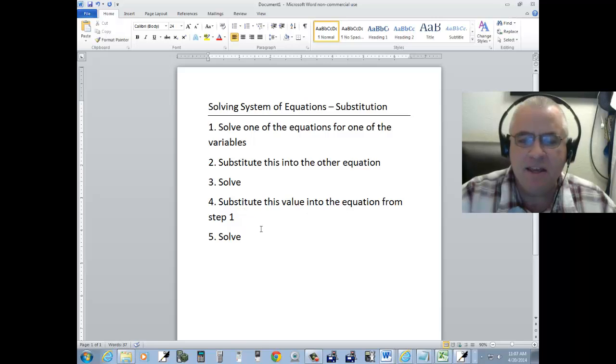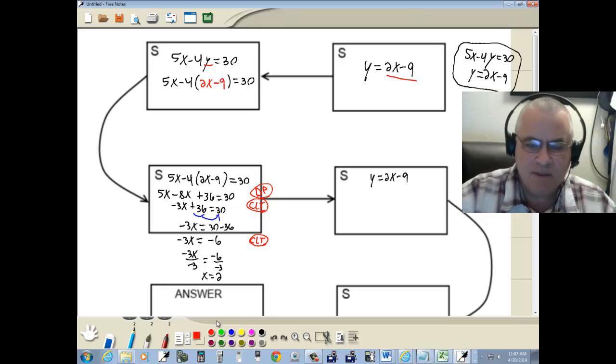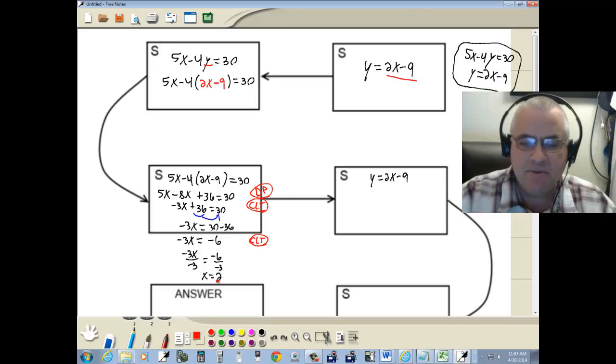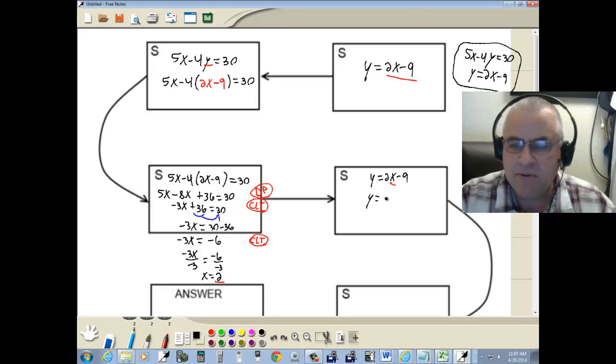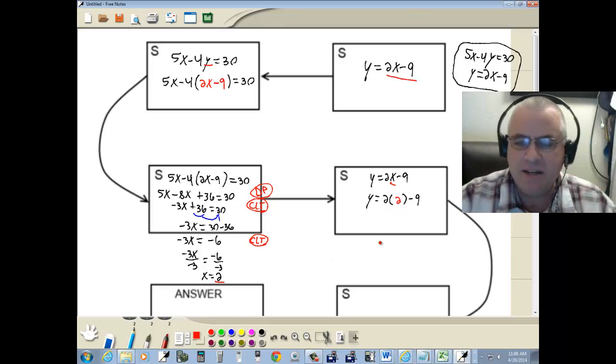Step 4. Substitute this value into the equation from step 1. The equation from step 1 will always be solved for the other variable. So we've got y is equal to 2x minus 9. And we just said that x is equal to 2. So we're going to replace the x here with 2. So we've got y is equal to 2 times 2 minus 9.